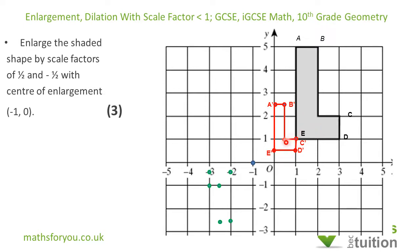Now for a scale factor of minus one half — similar process, except we go backwards and down. Starting from the center of enlargement for A: A is 2 to the right and 5 up, so with scale factor minus one half I move 1 to the left and two and a half down. That's A prime prime.